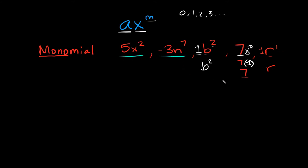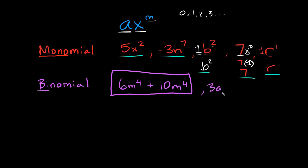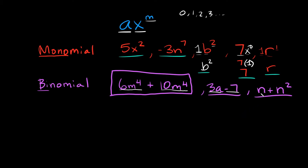So these are all examples of monomials. Now we also have something called binomials, and binomials are a combination of two terms. You can see the root word 'bi' — think of a bicycle, which has two wheels. For example, something like 6m to the fourth plus 10m to the fourth — this is a binomial. We can also call it a polynomial, but more specifically it's a binomial. Or something like 3a minus 7, or n plus n squared — these are also binomials, because they are each a combination of two terms by adding or subtracting. The two terms in the first example are 6m to the fourth and 10m to the fourth; here they are 3a and negative 7; and then n and n squared.